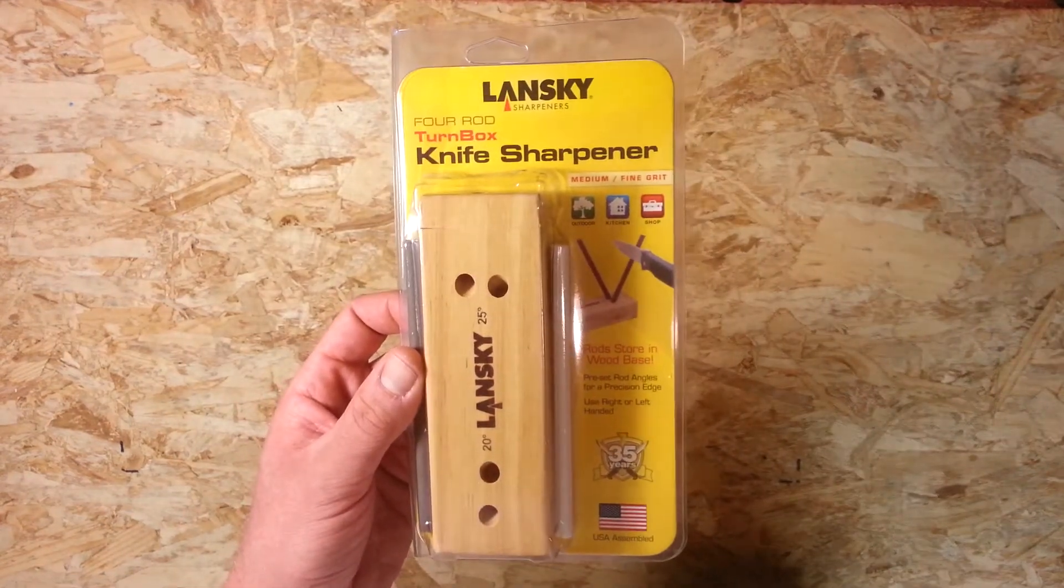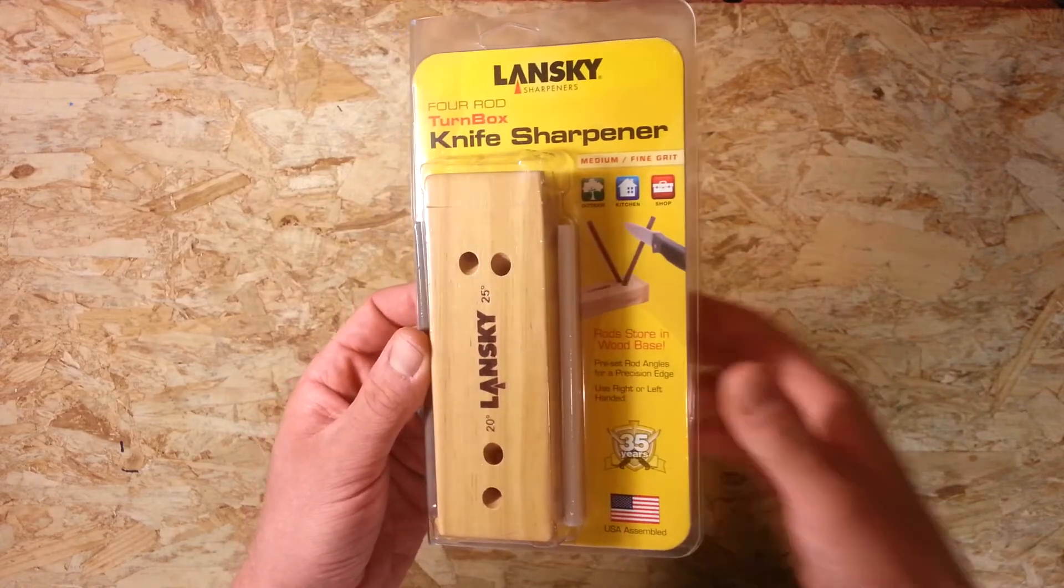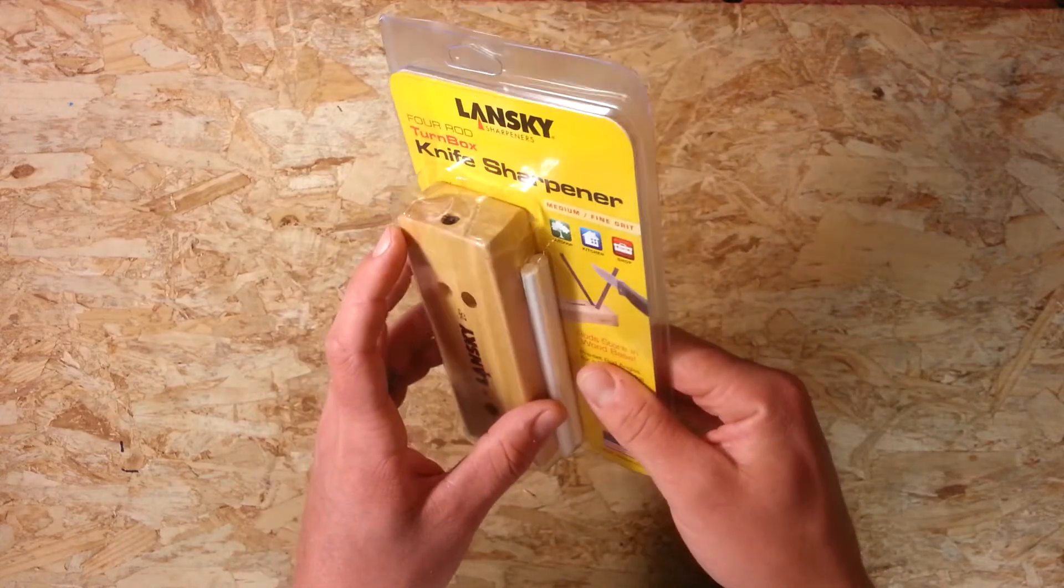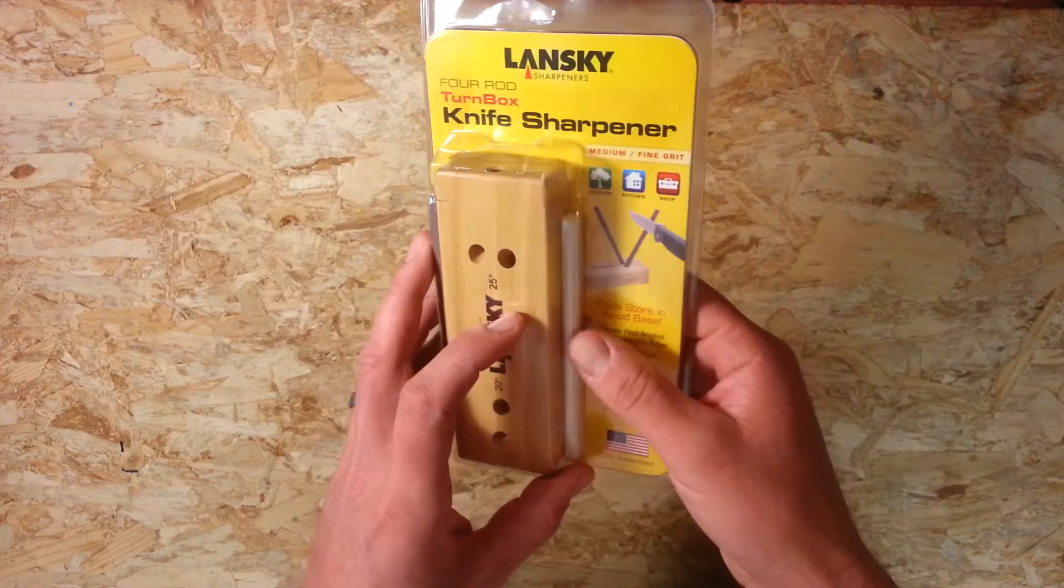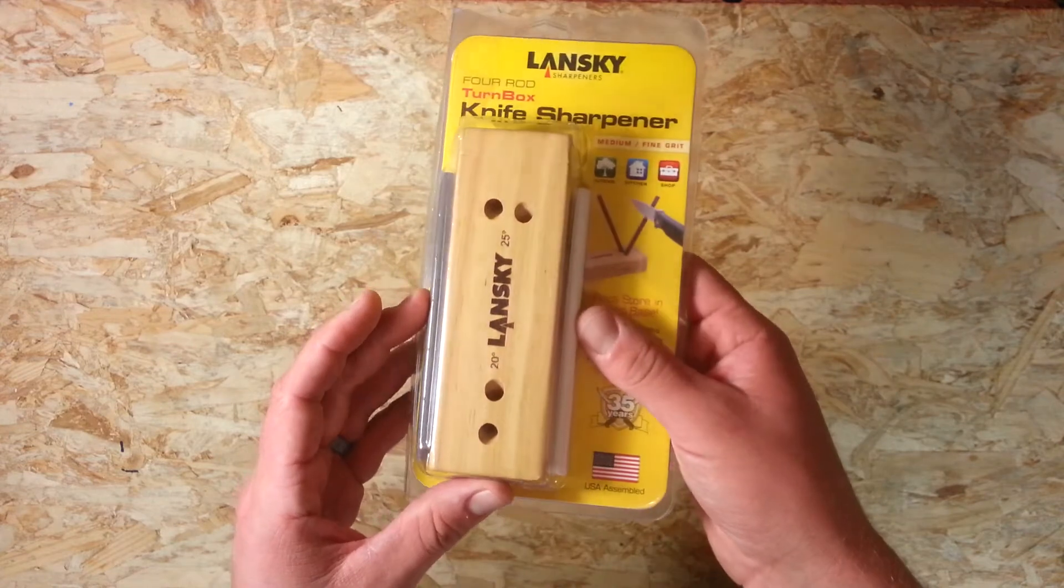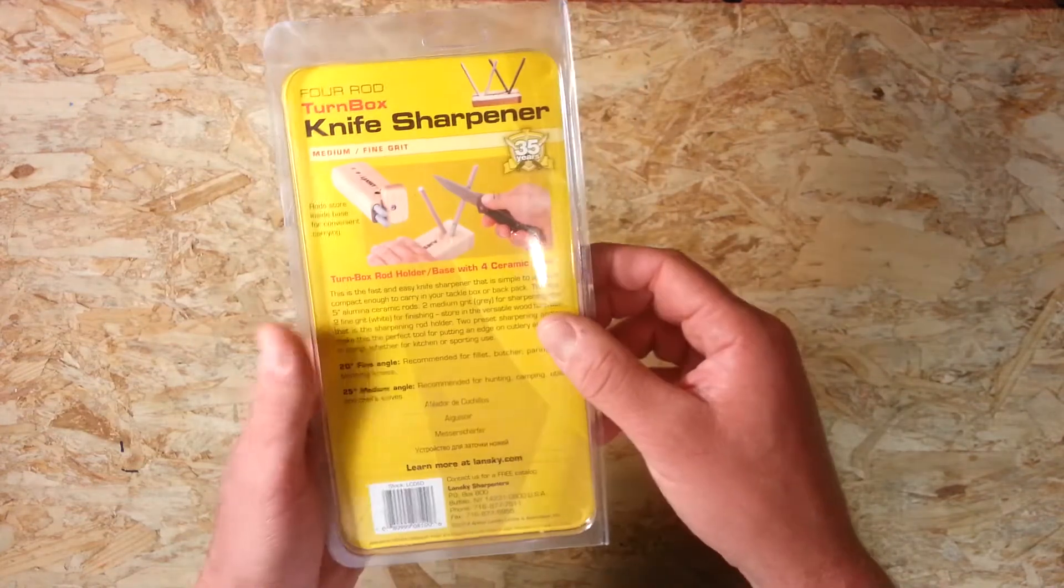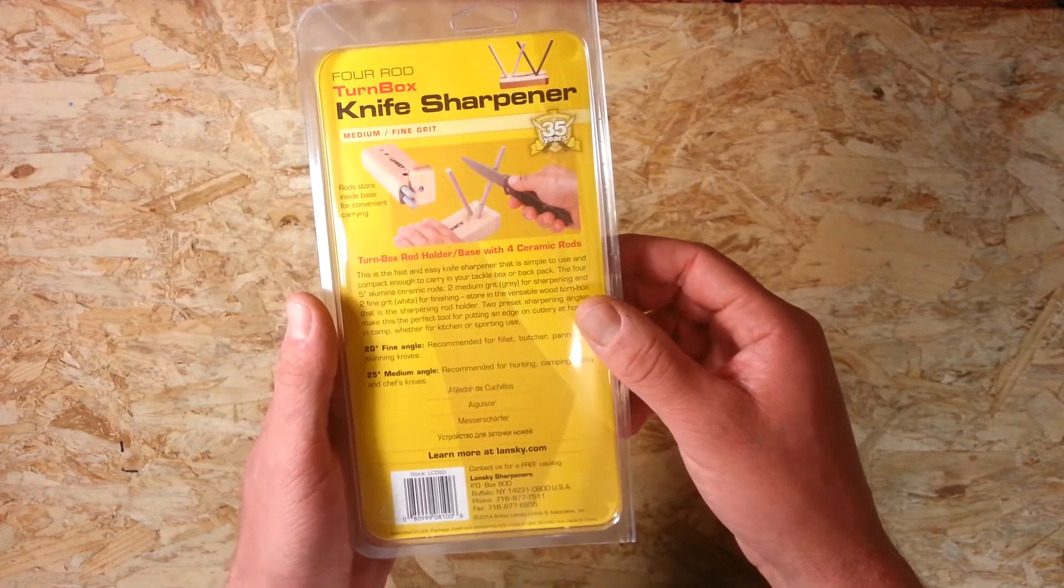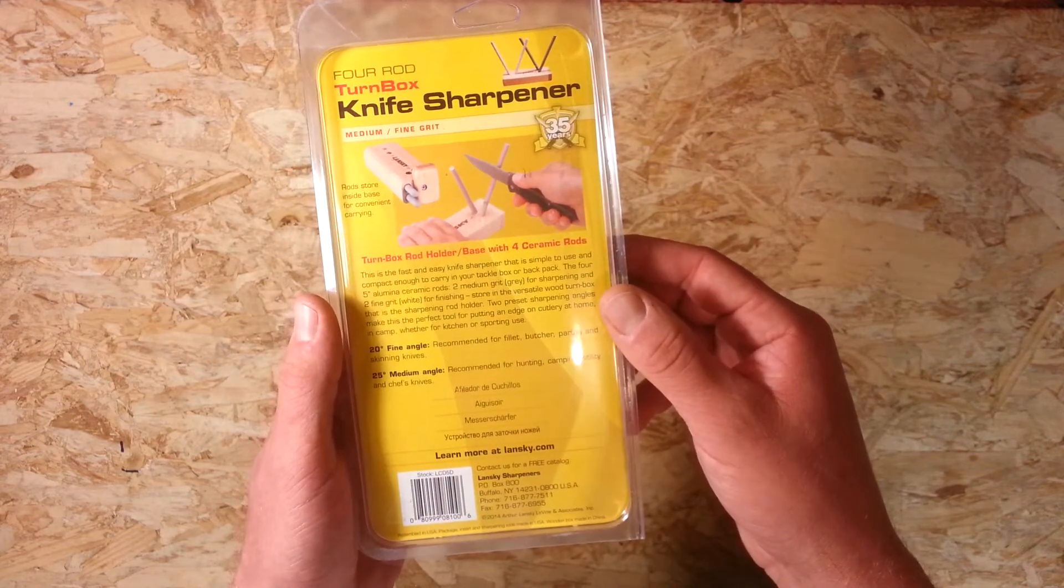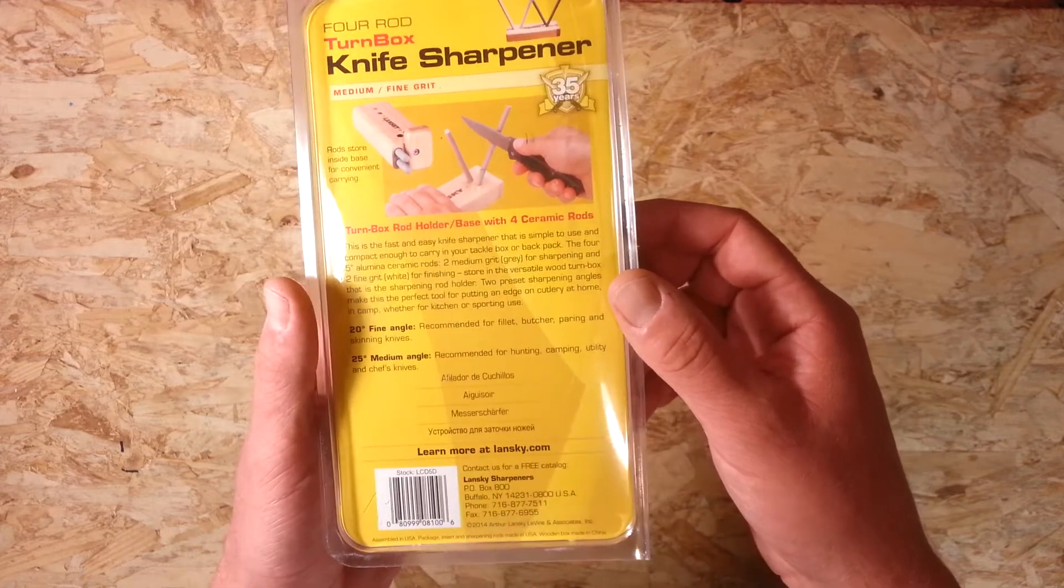There's thousands of videos on this on YouTube so you've probably already seen it a few times, but it is a small wooden box with a built in storage compartment and then you have four ceramic rods that go with it, two coarse, two fine. On the back you've got a basic illustration of how to set it up and about the angles on it.